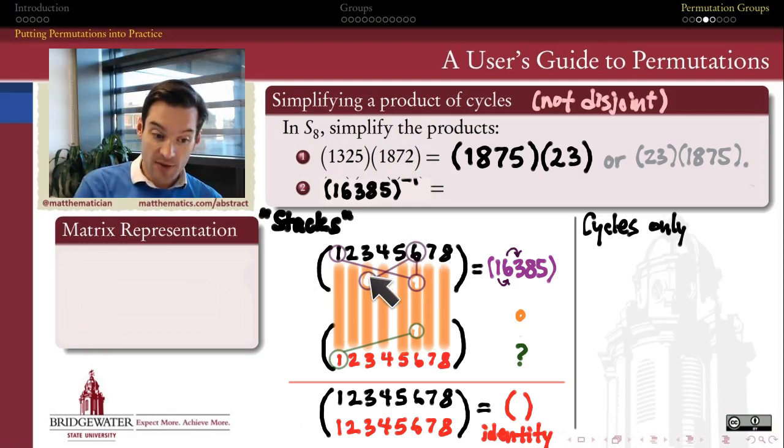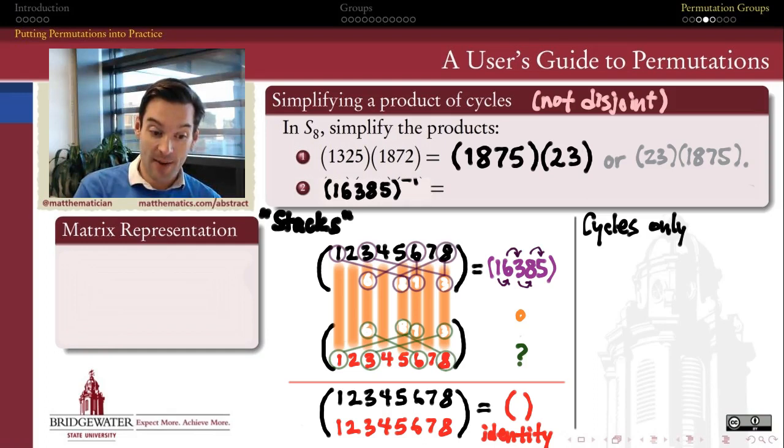So position 6 going to position 3 in my first cycle is going to have to be restored back to position 6 in the second cycle. Three going to 8 means the second cycle is going to have to move 8 back to 3. Eight going to 5 means the second cycle is going to have to move 5 back to 8. And in the first cycle, 5 returns to 1, which means in the second cycle, 1 has to go back to 5.